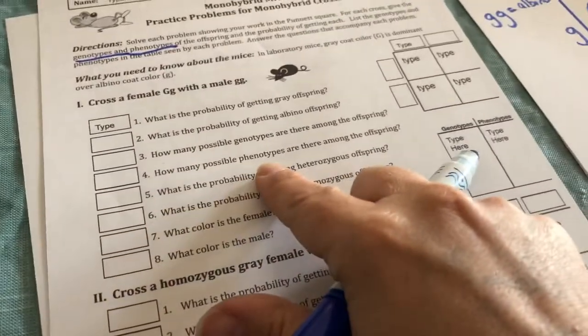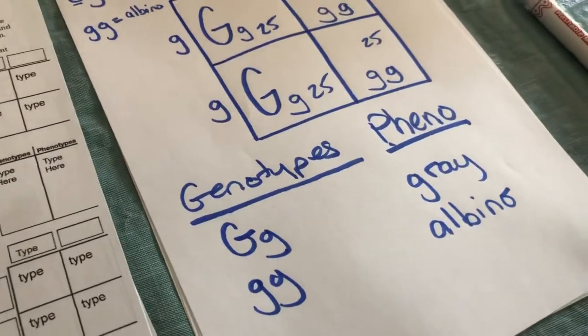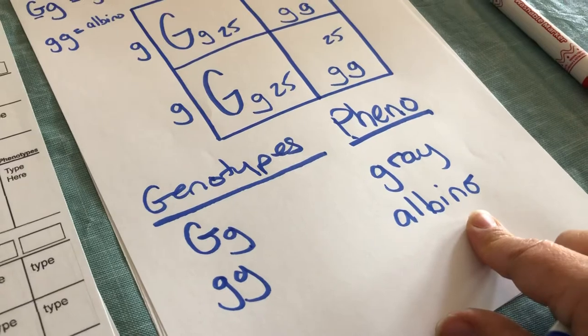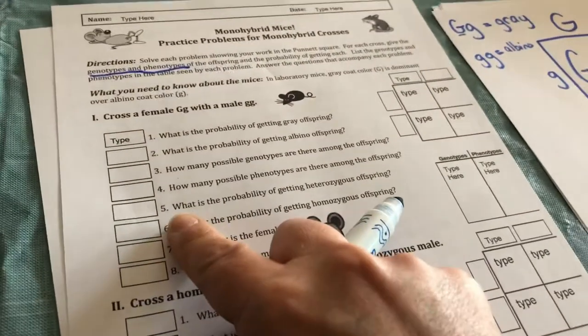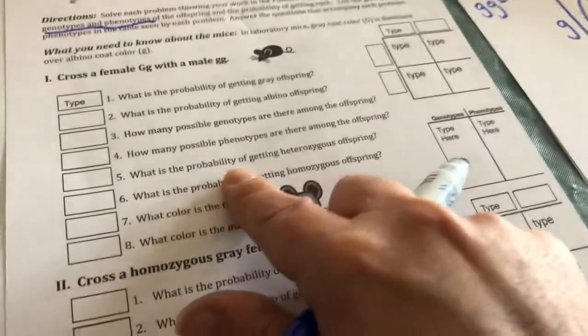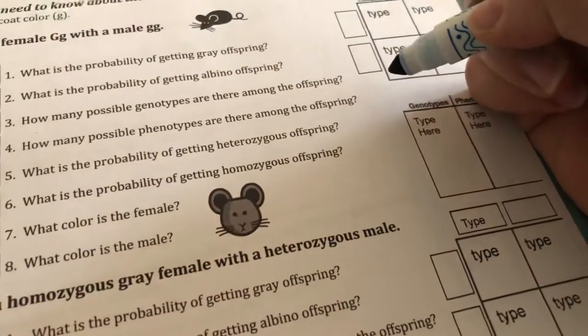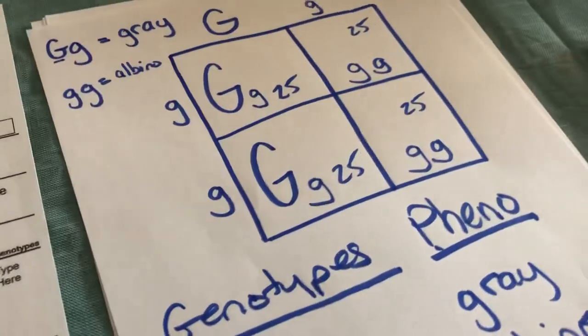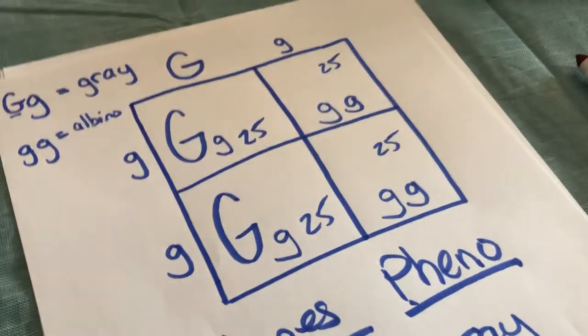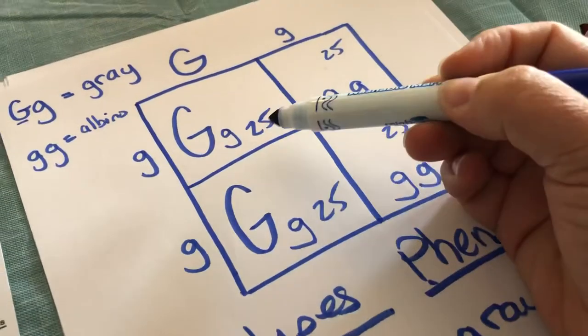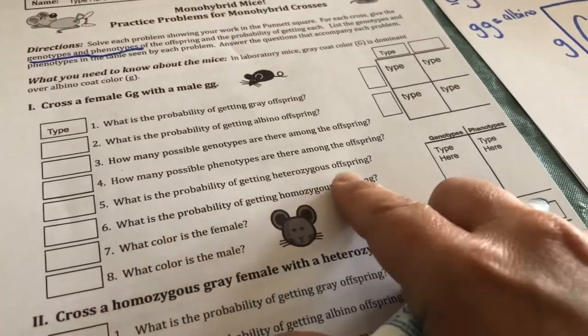Number four, how many possible phenotypes are there among the offspring? A phenotype, that's the physical characteristic of fur color. There are only two, gray and albino, that's it. Number five, what is the probability of heterozygous offspring? Heterozygous always means you have a capital and a lowercase. How many boxes have a capital and a lowercase? One, two, so 25% plus 25%, there's going to be a 50% probability of getting those heterozygous offspring.